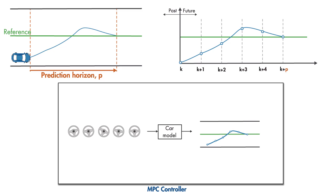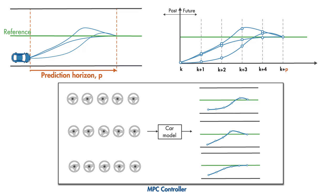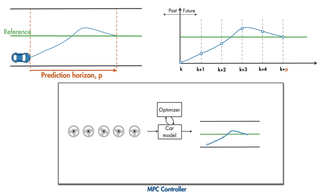The MPC controller needs to find the best predicted path that is the closest to the reference, so it simulates multiple future scenarios like this. However, it doesn't do these simulations in a random order. Instead, it does it in a systematic way, and this is where the optimizer comes into the picture.